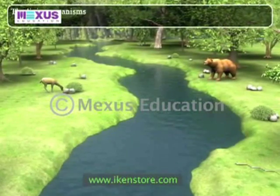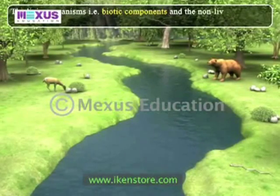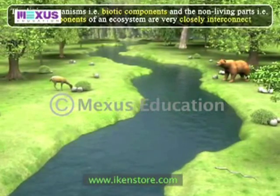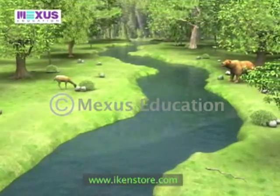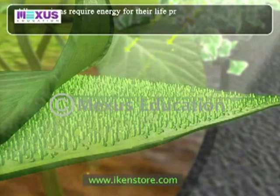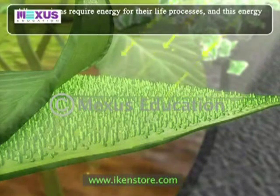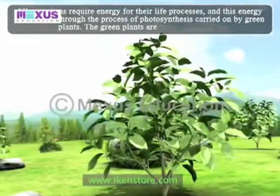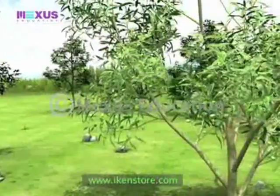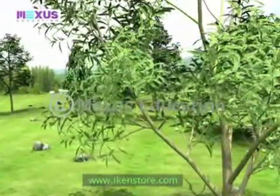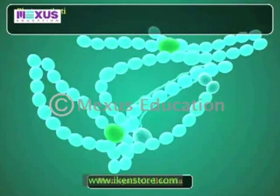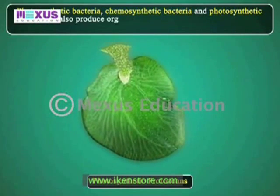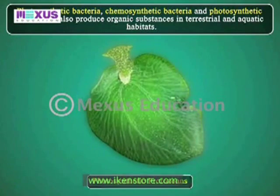The living organisms — that is, biotic components — and the non-living parts — that is, abiotic components — of an ecosystem are very closely interconnected. All organisms require energy for their life processes, and this energy is produced through photosynthesis carried on by green plants. The green plants are called producers. Producers are autotrophic, that is, self-nourishing. A variety of photosynthetic bacteria, chemosynthetic bacteria and photosynthetic protozoans also produce organic substances in terrestrial and aquatic habitats in very small amounts.